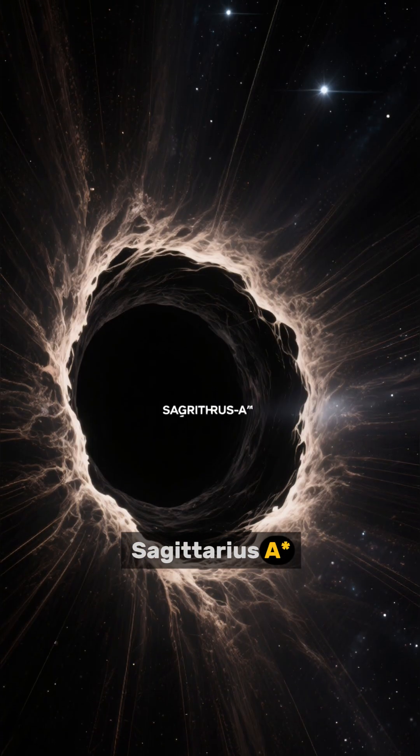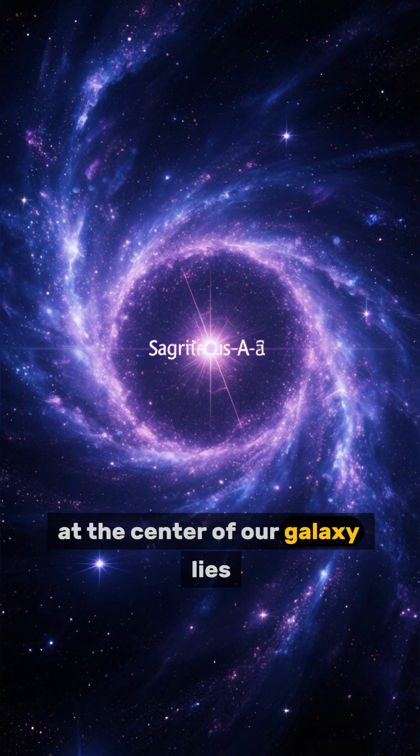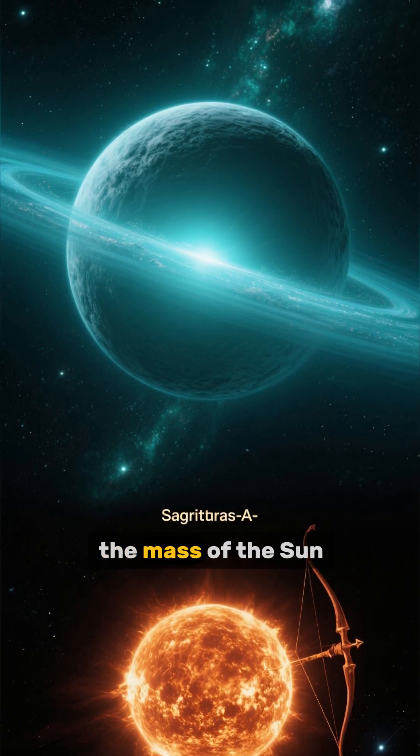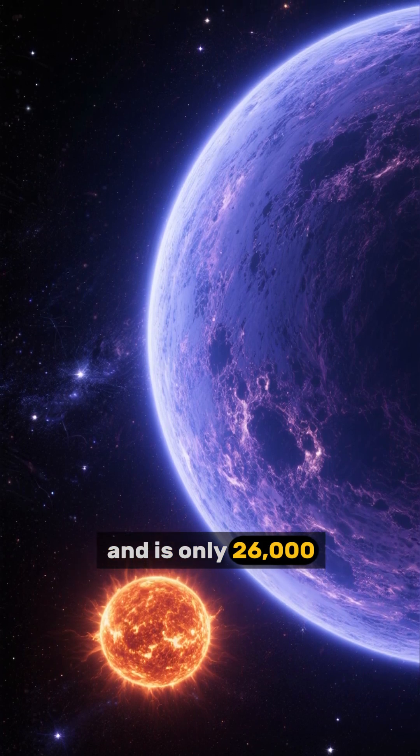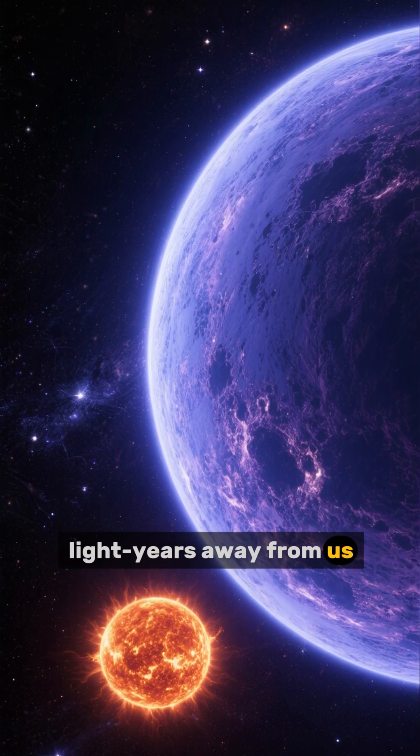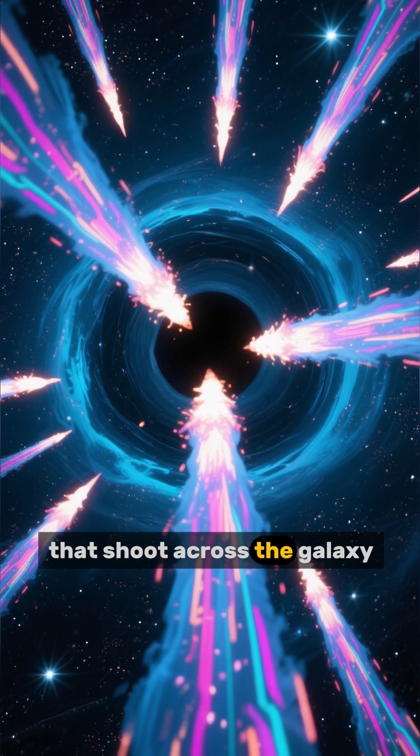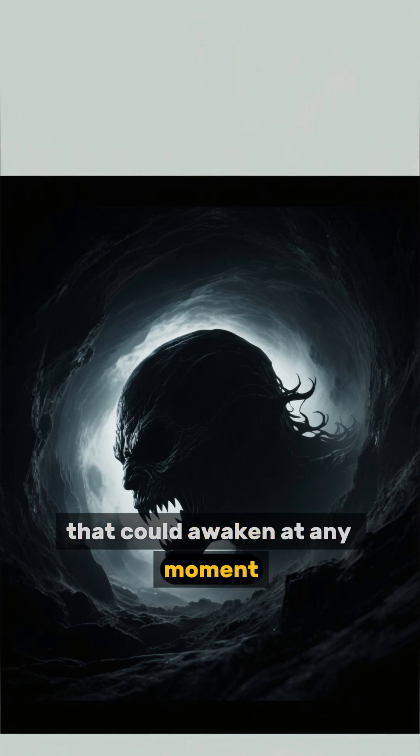Sagittarius A*, the monster at the center. First fact: At the center of our galaxy lies Sagittarius A*, a supermassive black hole four million times the mass of the sun. It devours entire stars and is only 26,000 light-years away from us. Occasionally, it burps out jets of radiation that shoot across the galaxy. We are orbiting a dormant cosmic monster that could awaken at any moment.